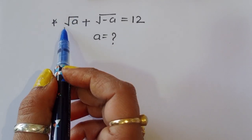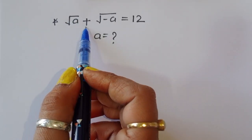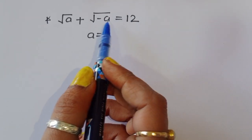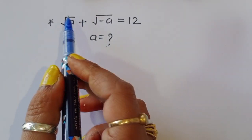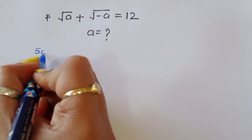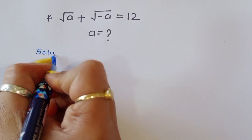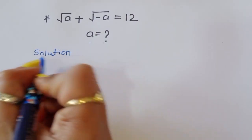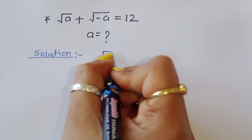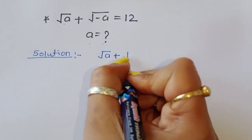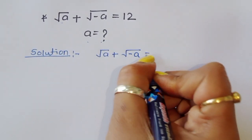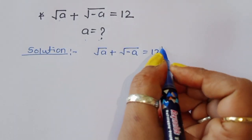The question is: given √a + √(−a) = 12, we have to find out the value of a. Let's see the solution. √a + √(−a) = 12 — this is our question.